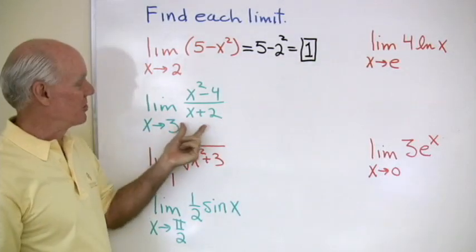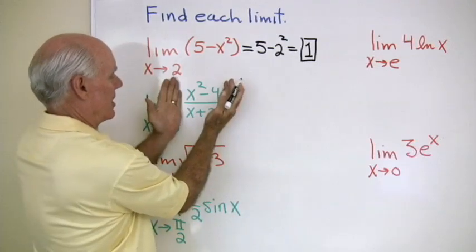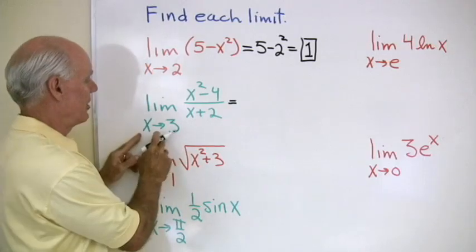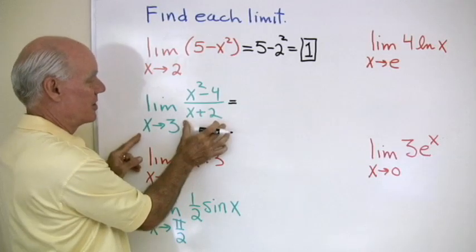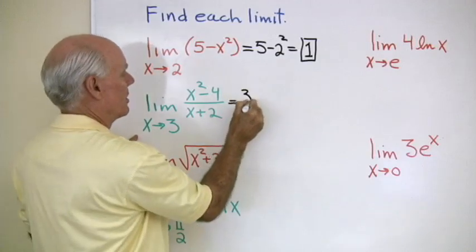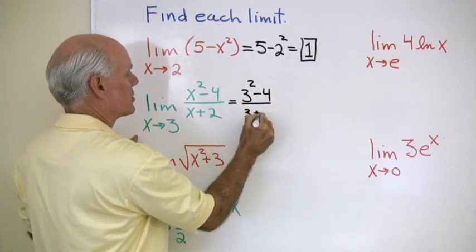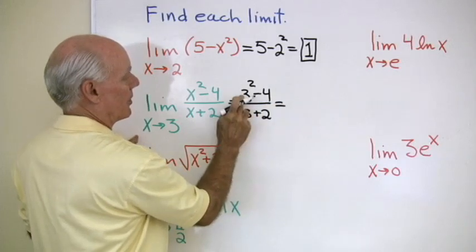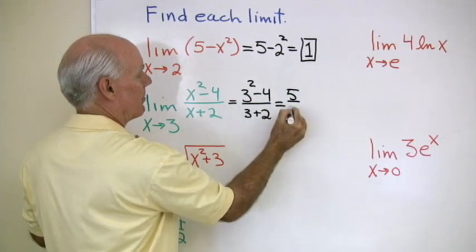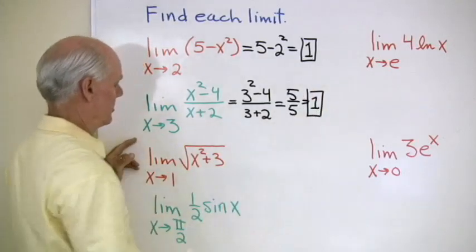Let's take the limit as x goes to 3 of this expression. I recognize this as a rational expression, so I have a rational function here. This thing is defined at x equal to 3, so I'm just going to substitute: 3 squared minus 4 divided by 3 plus 2. I end up with 9 minus 4, which is 5, divided by 5, so I end up with 1. That limit turns out to be 1.